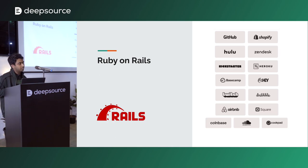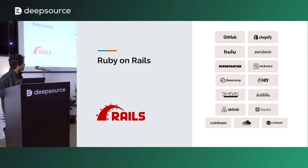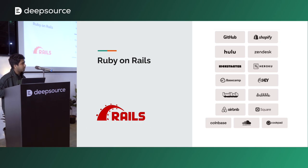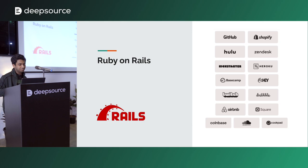Ruby got famous because of Ruby on Rails, the full-stack web framework that powers a lot of commonly used websites. Famously, GitHub uses Ruby on Rails and has been on it since before version 1.0. A lot of companies use it: Twitch, Airbnb, Coinbase, SoundCloud — big companies. So it's not some small toy thing.